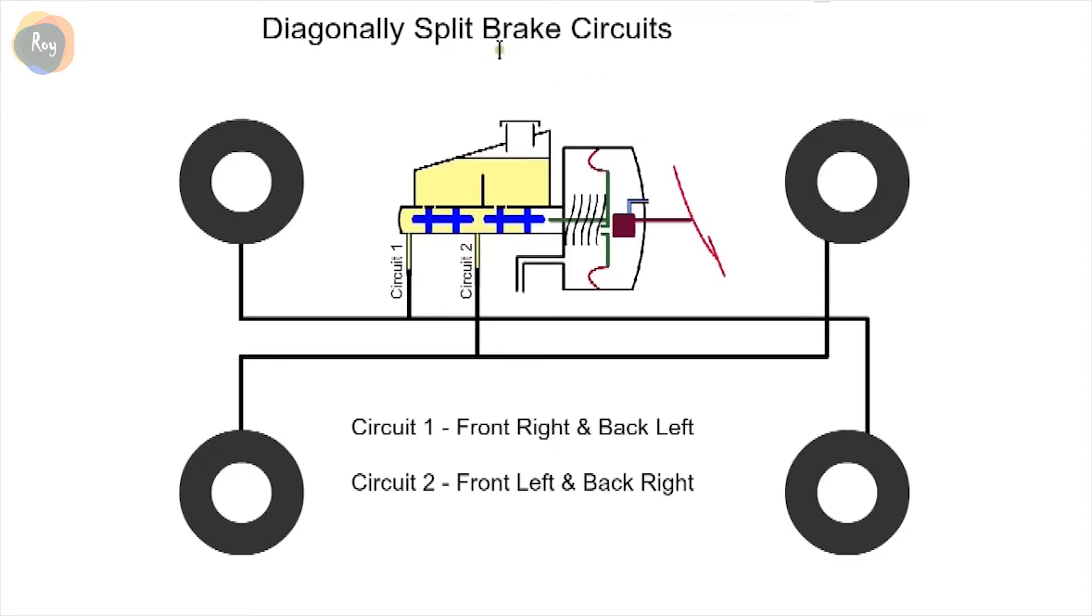With diagonally split brakes, two circuits are used: circuit one front right and back left, circuit two front left and back right. If a leak occurs on one circuit, the car can still be stopped with the other circuit.